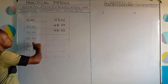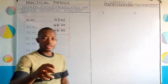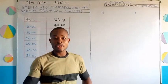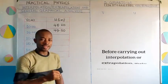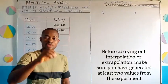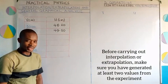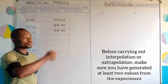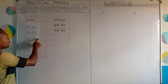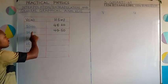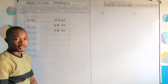Let us extrapolate the u value for v equal to 20 cm. I will use the two known values: when v was 10 cm, u was 48.2 cm, and when v was 15 cm, u was 49.50 cm. If you're going to use extrapolation, I advise you to carry out at least two experiments to get values which will help you to extrapolate the rest.